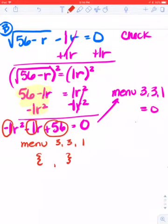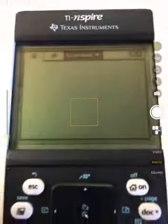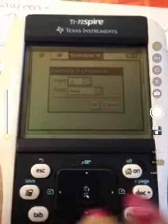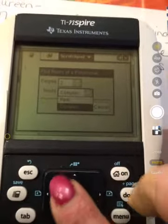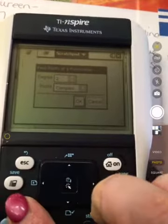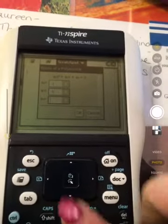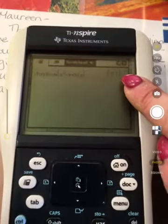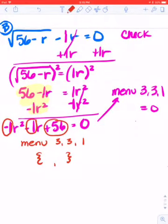Okay, let me see if I can balance this so you can see my calculator. Okay, so here's my calculator. I'm going to do menu 3, 3, 1. That stays on 2 for the degree. And then I have to make sure my second one is always on complex. Then I'm going to go put my numbers in. So negative 1, negative 1, and 56. So I end up with negative 8 and 7. So in my set, negative 8 and 7.